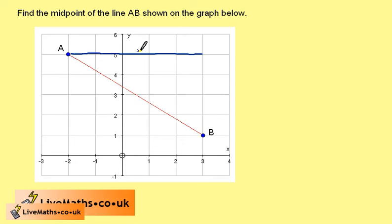To go from A to B, we could go across by 5 units and then down by 4 units. So the midpoint must be half of this.